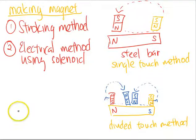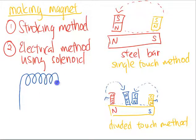Very simple. We will set up a circuit with a solenoid. A solenoid is a coil of insulated copper wire. Then we have a switch here, followed by DC current.